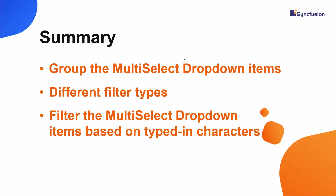In this video, we have seen how to group and filter items in the Angular multi-select drop-down component. We saw the supported filter types, how to apply them, and how to include diacritic characters while filtering. If you would like to see an interactive working example, you can download it from the GitHub link shared in the description below. I have also included a link where you can check if you qualify for our community license, which gives you a free license key for our entire Angular suite. If you found this video useful, don't forget to click the like button and subscribe to our channel. Thanks for watching.